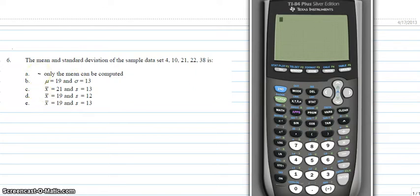A. Only the mean can be computed. B. Mu equals 19 and sigma equals 13.